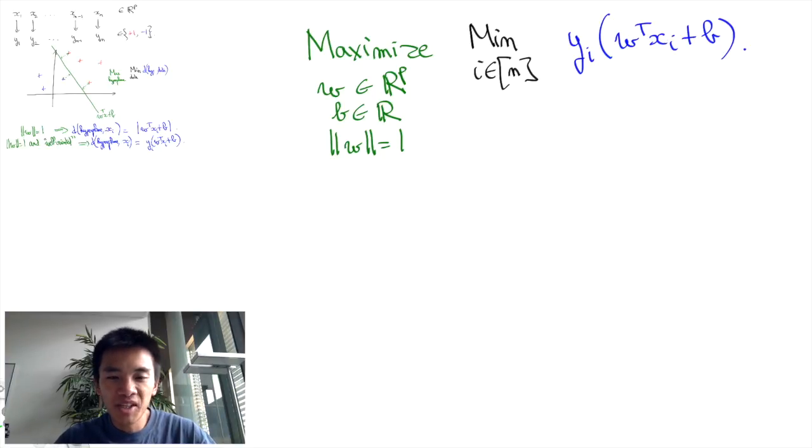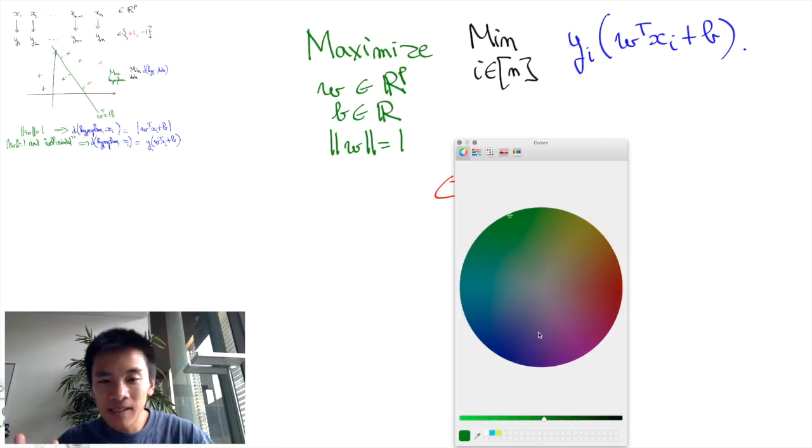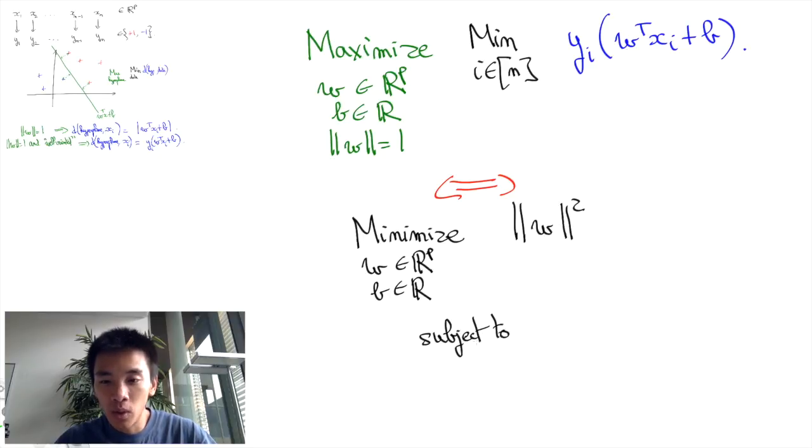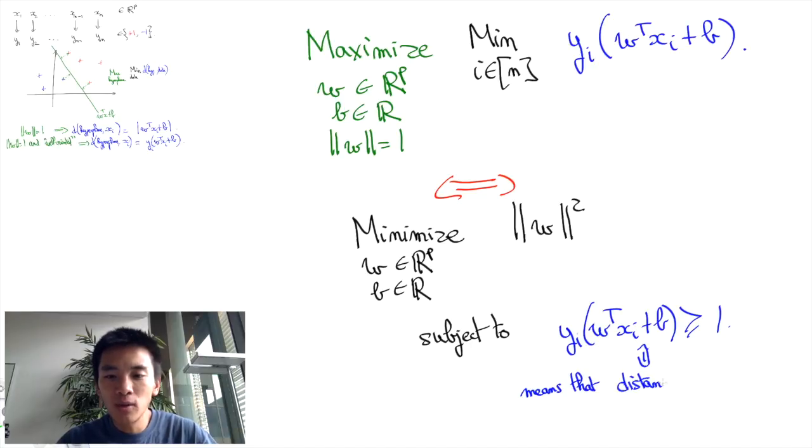Note that this optimization program is equivalent to a similar program which minimizes over W and B the norm of W squared subject to YI times W transpose XI plus B greater than 1. In particular, the constraints here are equivalent to saying that all data points are at distance at least one over the norm of W from the hyperplane.